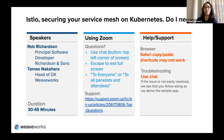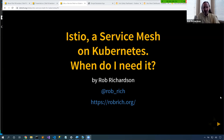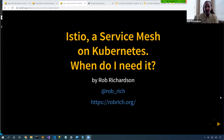With that, I'll hand it over to Rob. Thanks for the introduction and thank you for joining — thank you for sharing your lunch with us. We're going to talk about Istio, a service mesh on Kubernetes, and in particular, when do I need it? Here's the part where I tell you I'm definitely going to post my slides on my site tonight. You'll look on my site tomorrow, next week, next month. In about three months you'll get tired of waiting.